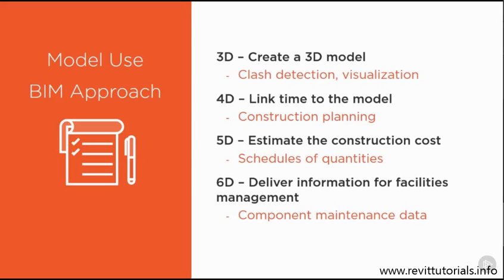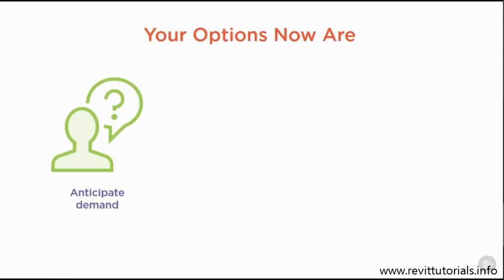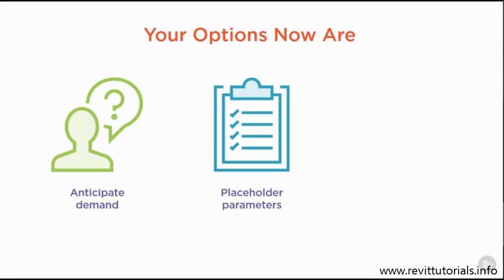For example, the weight and size of a transformer can help the structural engineer to account for the transformer load. Being able to anticipate the model demands will be a nice investment. It will take a little more time in the beginning, but it may save lots of hours later. Sometimes having only placeholder parameters may be enough — just don't overdo it.